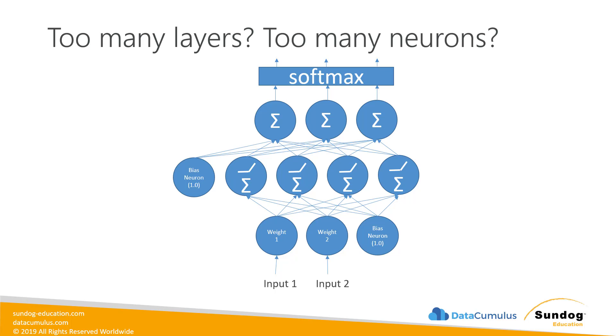Try fewer layers, try fewer neurons in each layer and see what kind of effect that has. If you can still have the same accuracy in your test data set but not overfit to your training data set, then why use more neurons than you need?